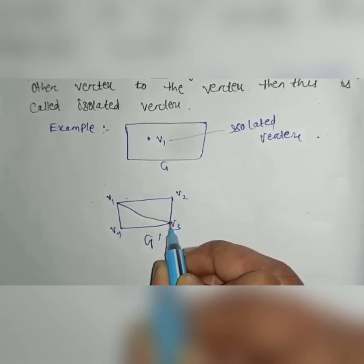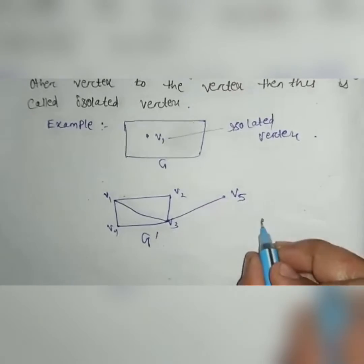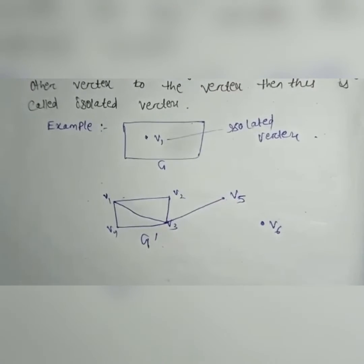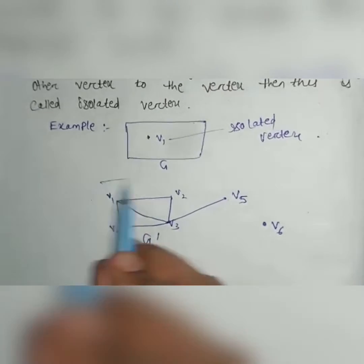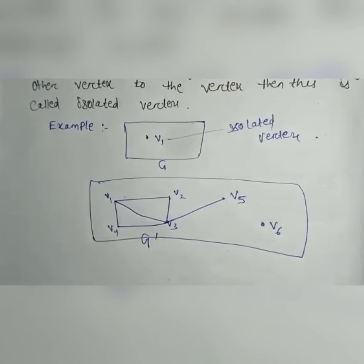V1 connected to V3, V3 connected to V5, and here is a vertex V6. So can you tell me, in this graph, which is the isolated vertex?